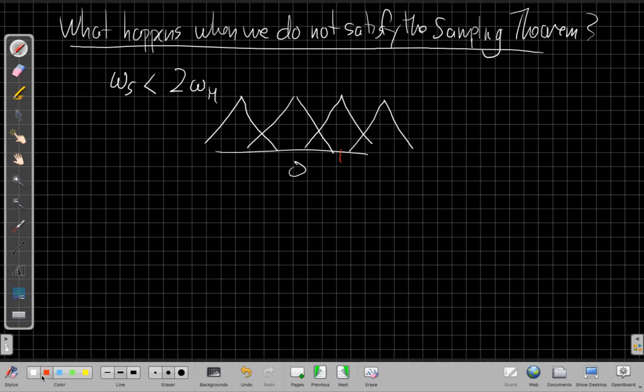And so when we go now to filter it out, if this was our omega s or minus omega s, because these things overlap, when we go filter it at pi over t, which is omega s over 2, when we cut this out, what would happen is some of these higher frequencies have sort of wrapped back or folded back inside, and this is what we call aliasing.